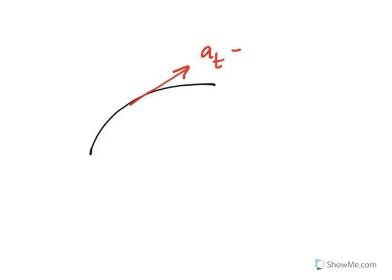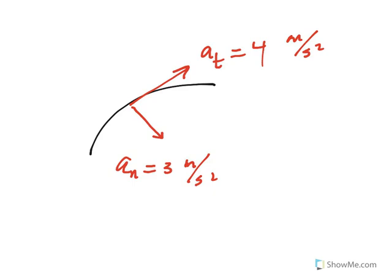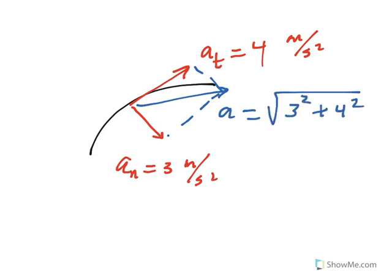For example, if at one instant the tangential component equals 4 m/s² and the normal component equals 3 m/s², then the magnitude of the total acceleration is √(3² + 4²) = √(9 + 16) = √25 = 5 m/s².